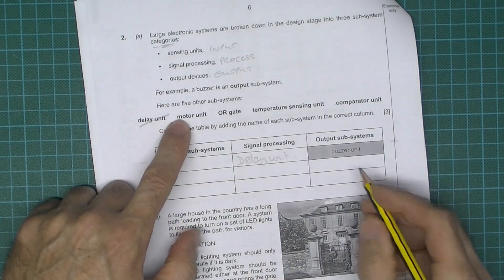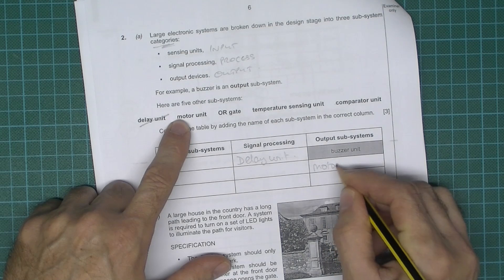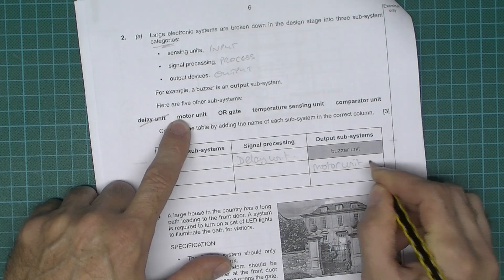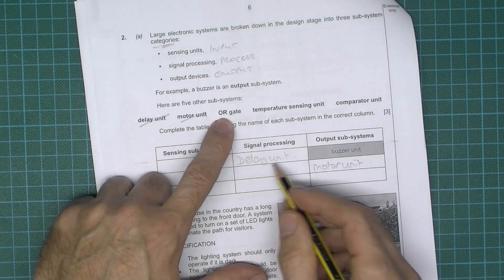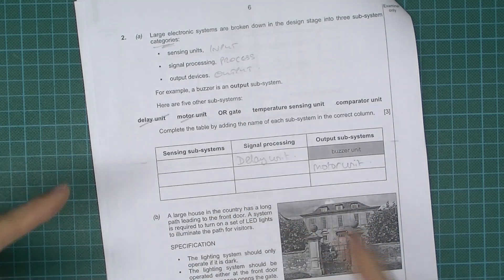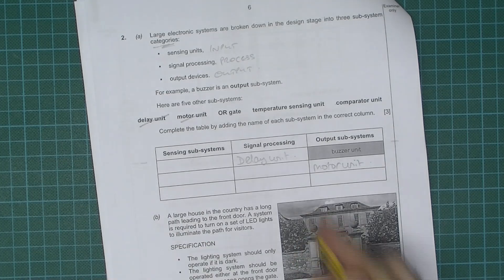Motor unit is most definitely an output. And hopefully you'll readily recognize this. I don't think it's a difficult question. An OR gate is something that does processing. You know, we might have two switch inputs which then go into an OR gate.